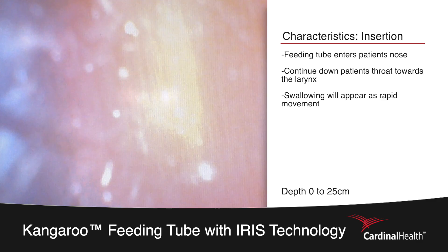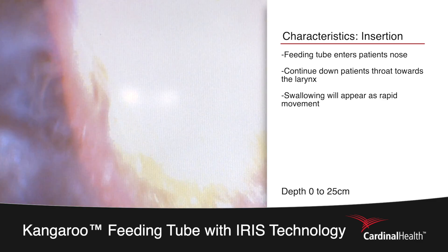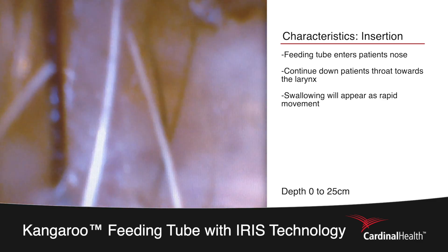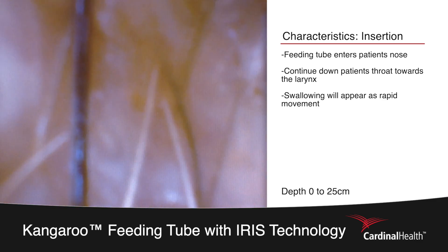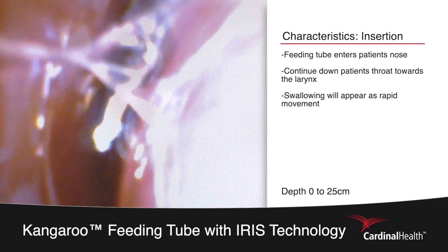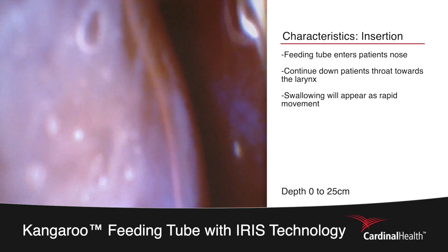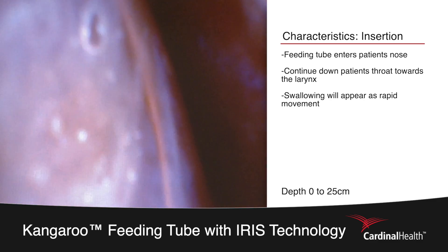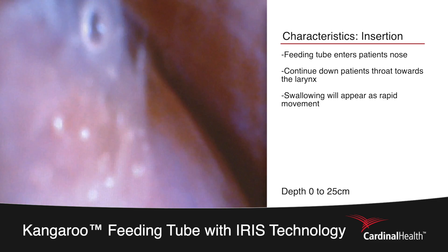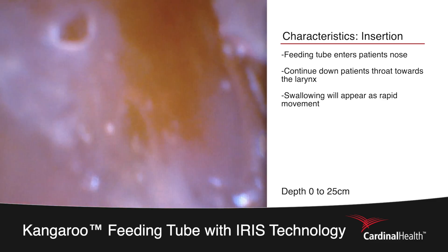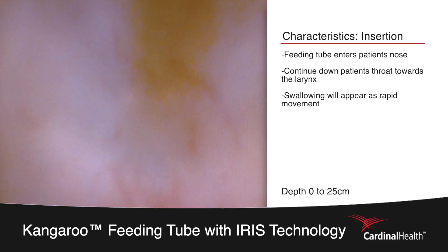The procedure begins with the placer inserting the feeding tube into the patient's nose, as can be seen here by the nasal hairs. The tube will then progress down the back of the patient's throat heading towards the larynx. The patient is swallowing, so we'll see some rapid movement and will quickly progress down into the esophagus.